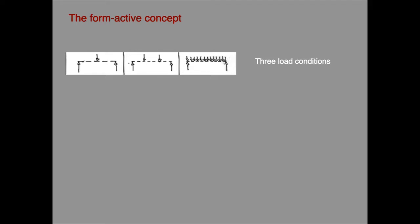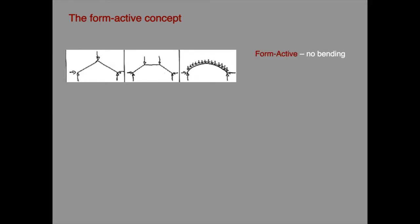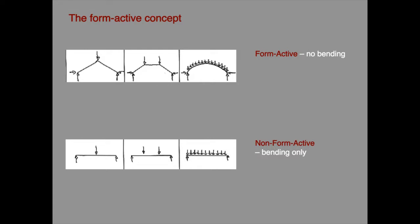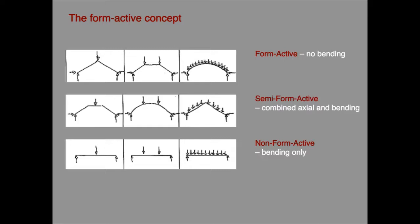Shown here are three load conditions and the form active shapes for these load conditions, in which there will be only axial internal force — these are the compression versions of a cable subjected to these loads. These shapes are the only ones that will produce axial internal forces for those load conditions. There is another unique shape for each load condition which produces only bending type internal forces; these are known as the non-form active shapes. Any other shape will be semi-form active and will carry a combination of axial and bending type internal force.